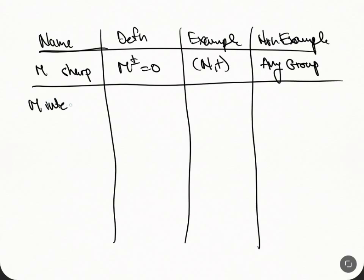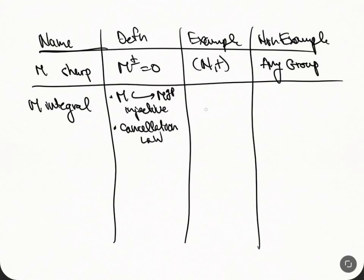Next: M is integral. This means the map into the groupification is injective. Another way of saying it is that M has a cancellation law. An example is the natural numbers. For a non-integral example, take the natural numbers but add two copies of one — call them one-one and one-two — where addition gives the normal result, but this violates the cancellation law.